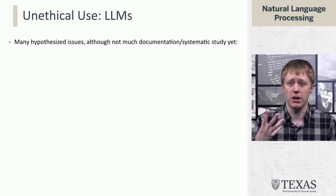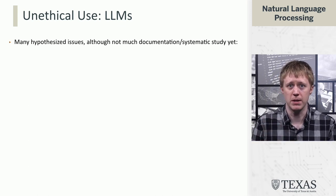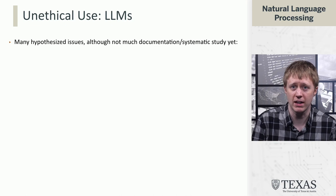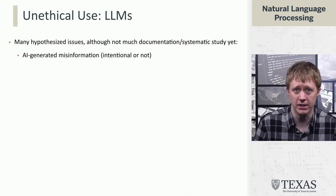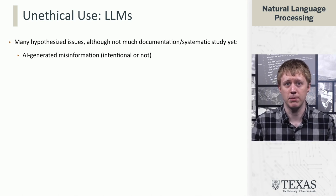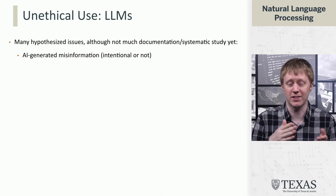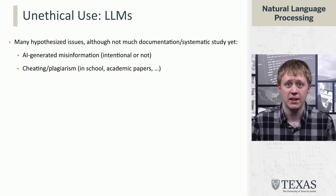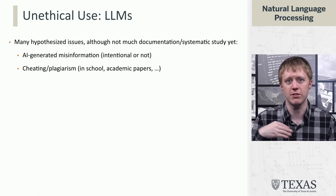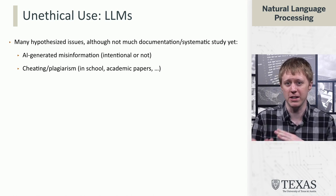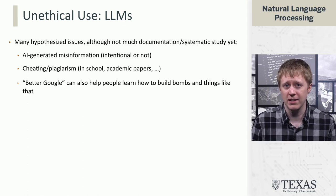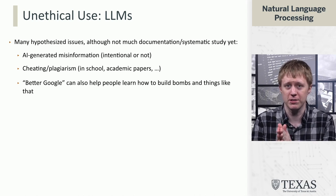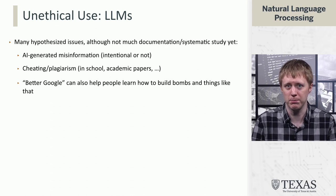Large language models bring up a whole separate set of ways they can be used unethically. This is still emerging, with only some cases now documented in practice or studied systematically. These include AI-generated misinformation campaigns — whether intentional or because the system simply returns the wrong answer and many people believe it. There's also the conversation around education and whether students using these for essays constitutes plagiarism, and more critically, that these tools can help people do harmful things more effectively, such as learning how to build bombs.